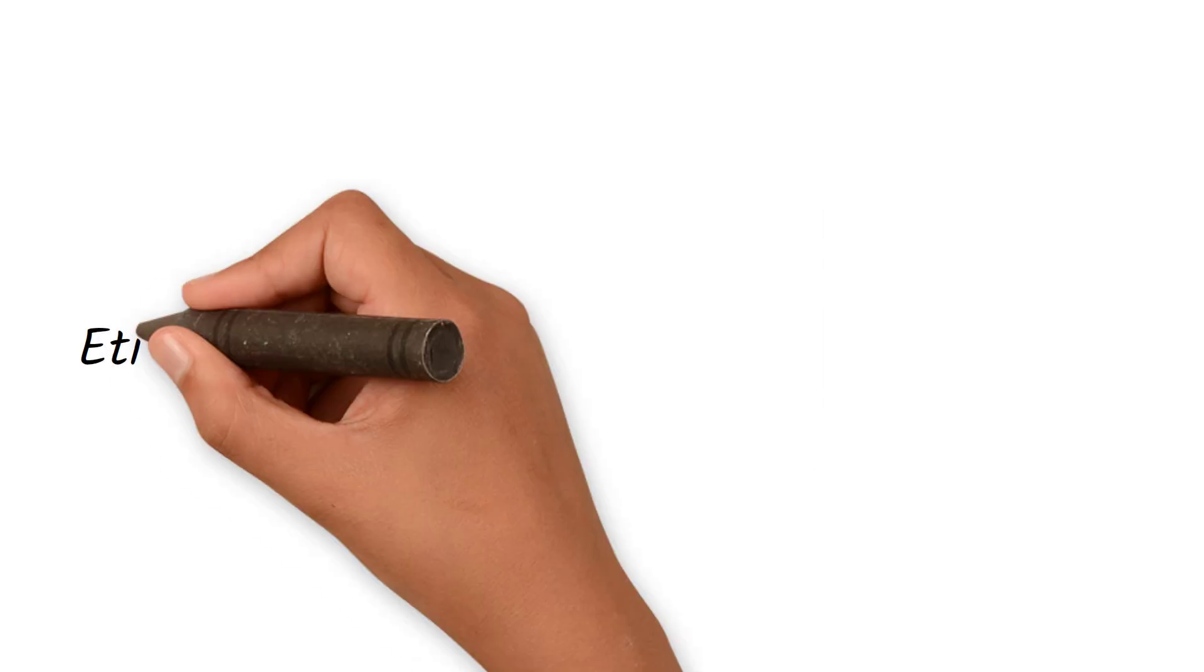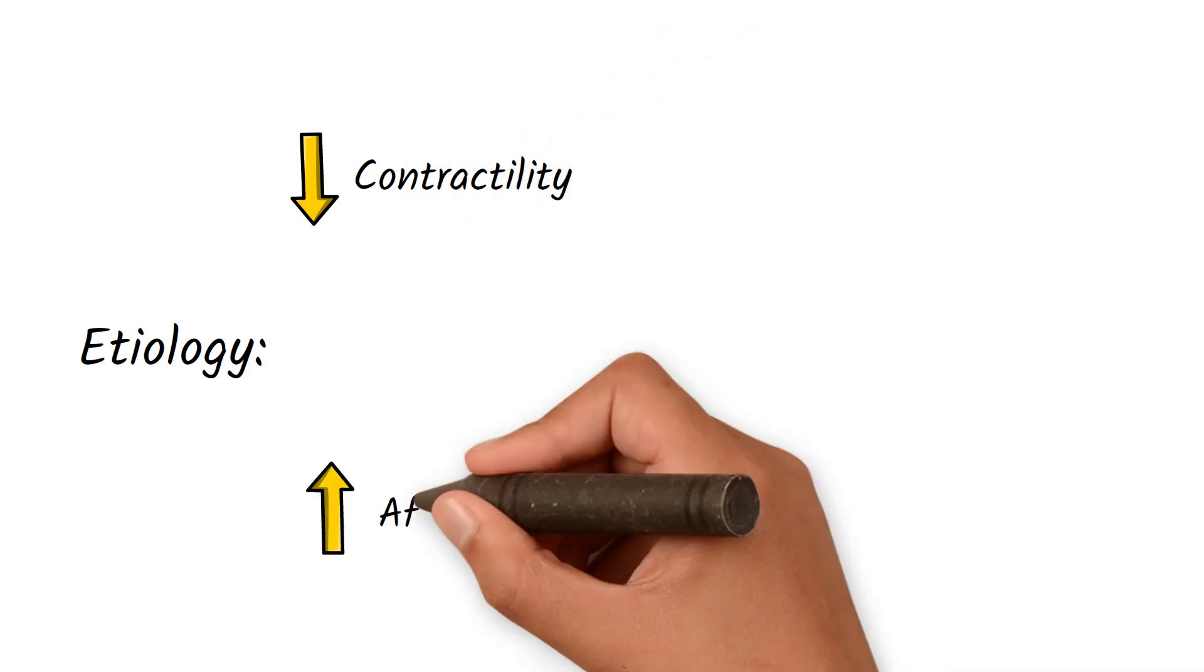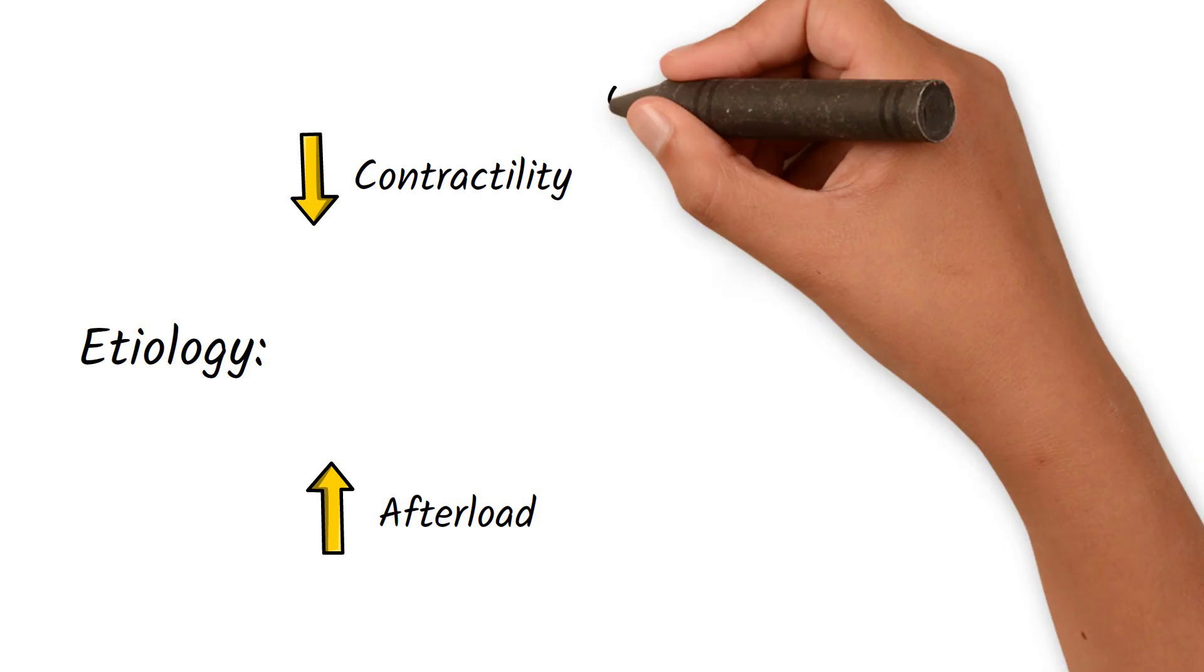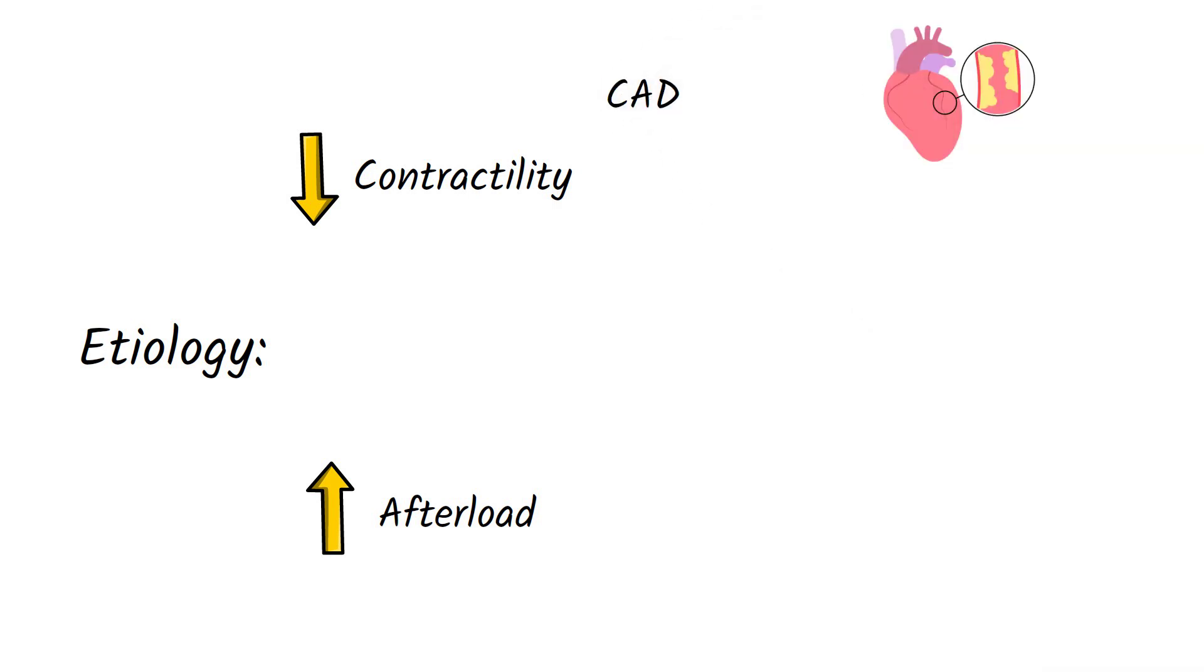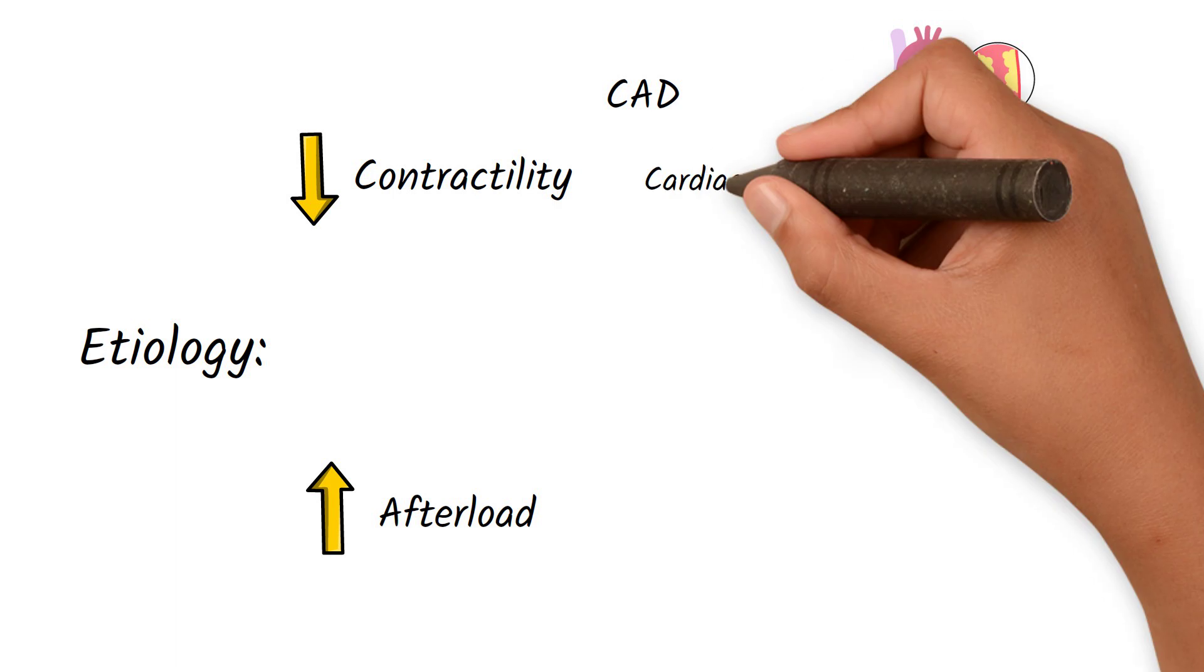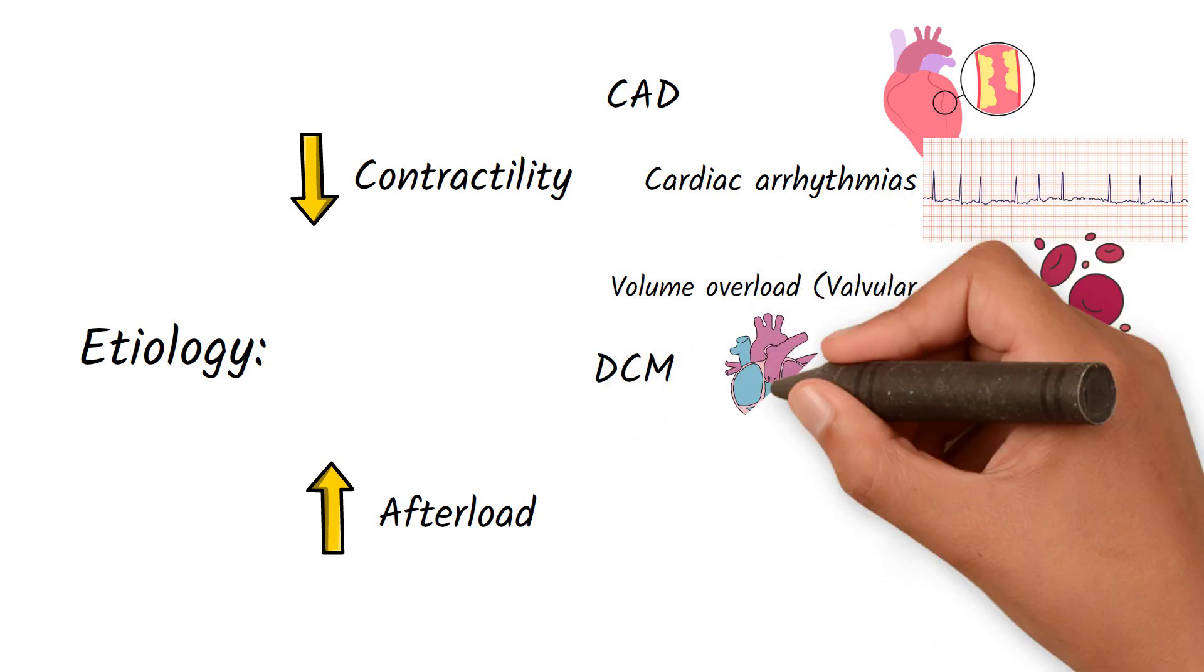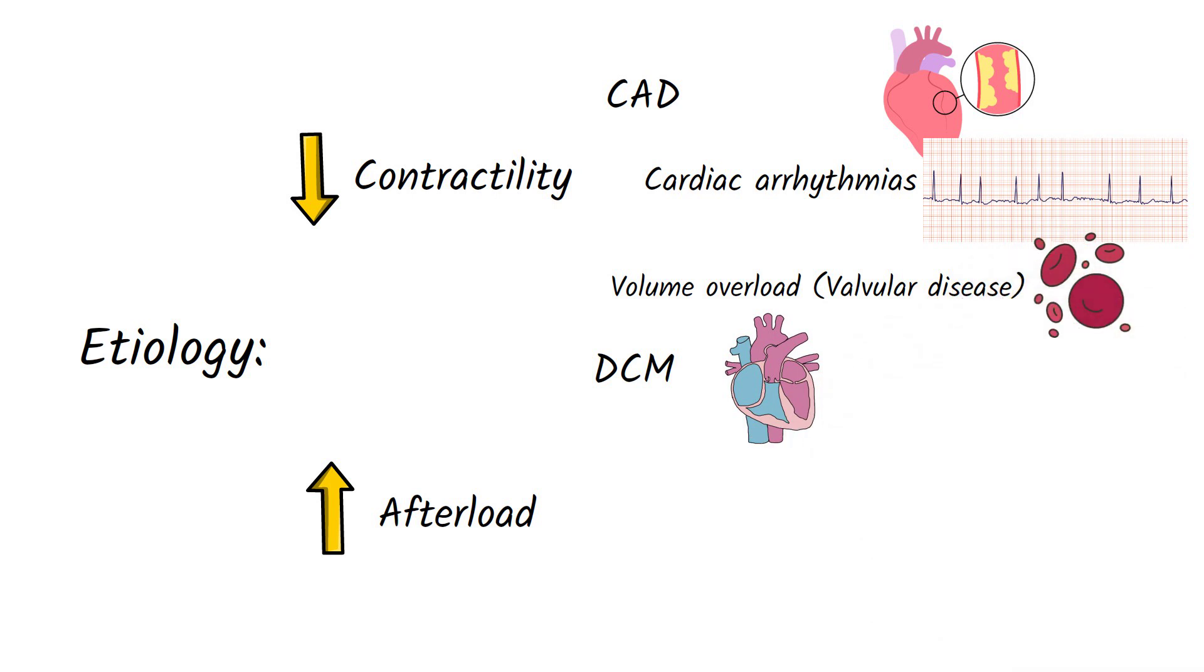This condition can be caused by impaired contractility of the heart or an increase in afterload. Impaired contractility of the heart can be caused by conditions such as coronary artery disease, cardiac arrhythmias, volume overload which can be caused by valvular diseases, and dilated cardiomyopathy, which is a condition in which the heart muscle becomes stretched and dilated, resulting in the weakening of the heart muscle.